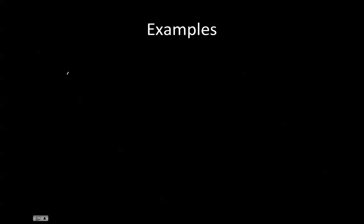Now let's practice using the product rule. Let's say we have y of x equal to x to the power of 5 multiplied by sine of 3x. Our two factors are x to the power of 5 and sine of 3x.